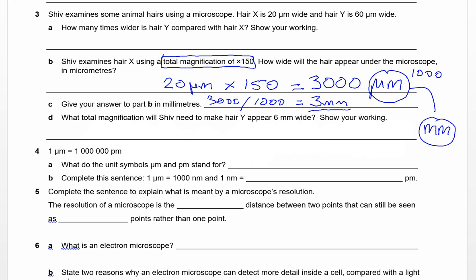Let's go to part D. This is quite a challenging question. What total magnification will Shiv need to make hair Y—careful, we're talking about hair Y now—appear 6 millimeters wide? Show your working. Let's have a go at that and make a bit of space.